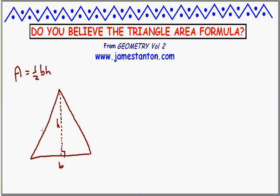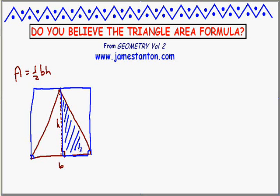Well, do you believe that formula? This is something one does in middle school, and how one checks this formula is usually to encase that triangle in a rectangle, assuming all the corners are right angles. The thing to notice is that this height line actually divides that rectangle into two parts — the right part of the triangle is half the right portion of the rectangle, and the left portion of the triangle is half the left portion of the rectangle. So just by looking at this picture, you see the area of the triangle is half the entire area of the rectangle.